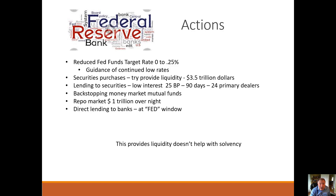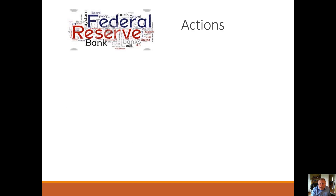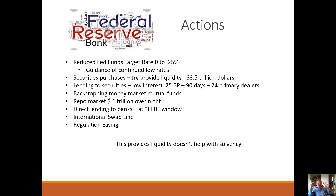They're doing direct lending to banks. In the past, if you had to go to the Fed window to borrow, that was considered bad. Today, they're encouraging it. They've set up international swap lines with other banks so we can continue to keep trade going and access to U.S. dollars. They've also eased some regulations. These tools are keeping liquidity or cash moving so that we don't seize up. But it doesn't help with solvency. It's very important to understand the difference between liquidity — keeping cash available — versus solvency of a company. Two very different things.